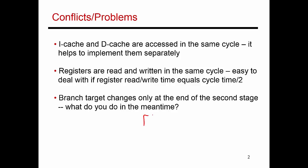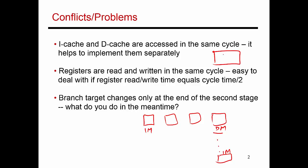An instruction accesses instruction memory, does register read, goes through the ALU, and then goes to the data memory stage. While you're performing the data memory operation, there could be an instruction later that's also trying to read the instruction memory at the same time. If you had one unified storage unit with both instructions and data, that same unified storage would have to service one data read and one instruction read simultaneously — requiring a memory structure with multiple read ports, which is expensive.